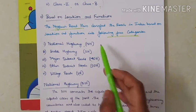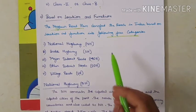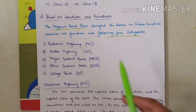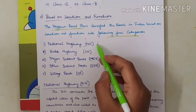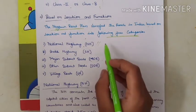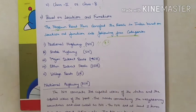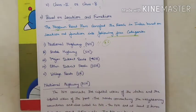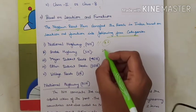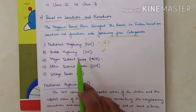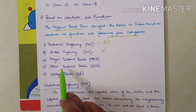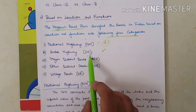National Highways connect the capital cities of states and capital cities with ports. NH has at least two lanes of traffic, is 7.5 metres wide, and has concrete or bituminous surfacing. State Highways are the main roads within the state and also have a width of 7.5 metres. Major District Roads connect areas of population and markets with either State Highways or railways.